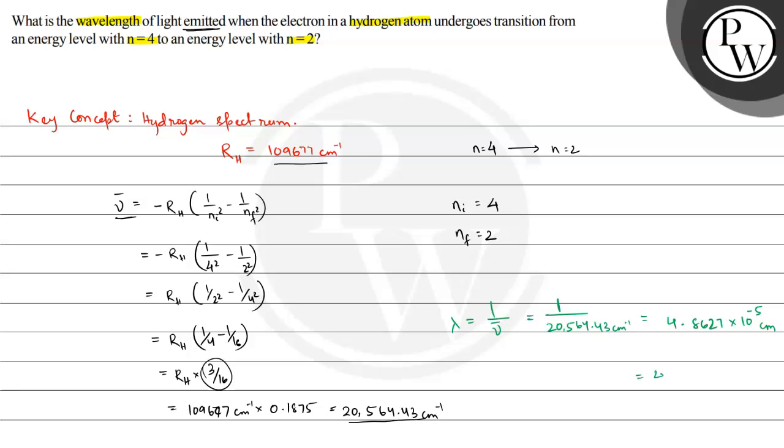So this is 4.86 into 10 to the power minus 5 centimeter - this is the wavelength. This is the wavelength of transition from n equals 4 to n equals 2. The energy emitted has this wavelength. This is the required answer, and I hope you understood the concept well. Best of luck.